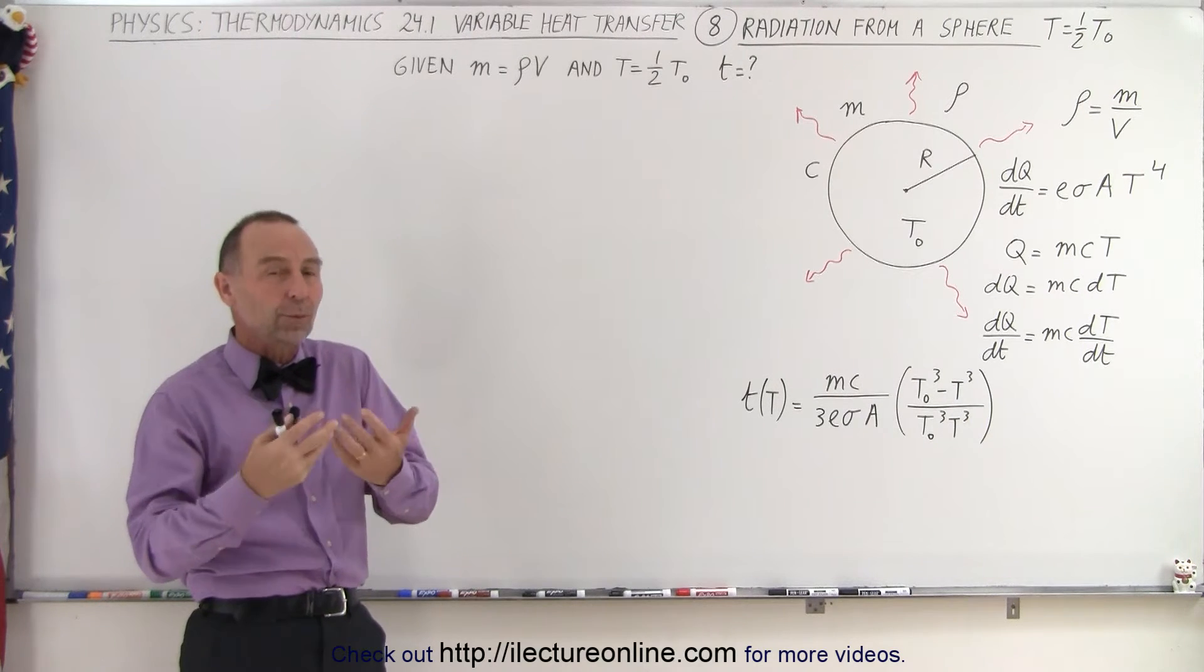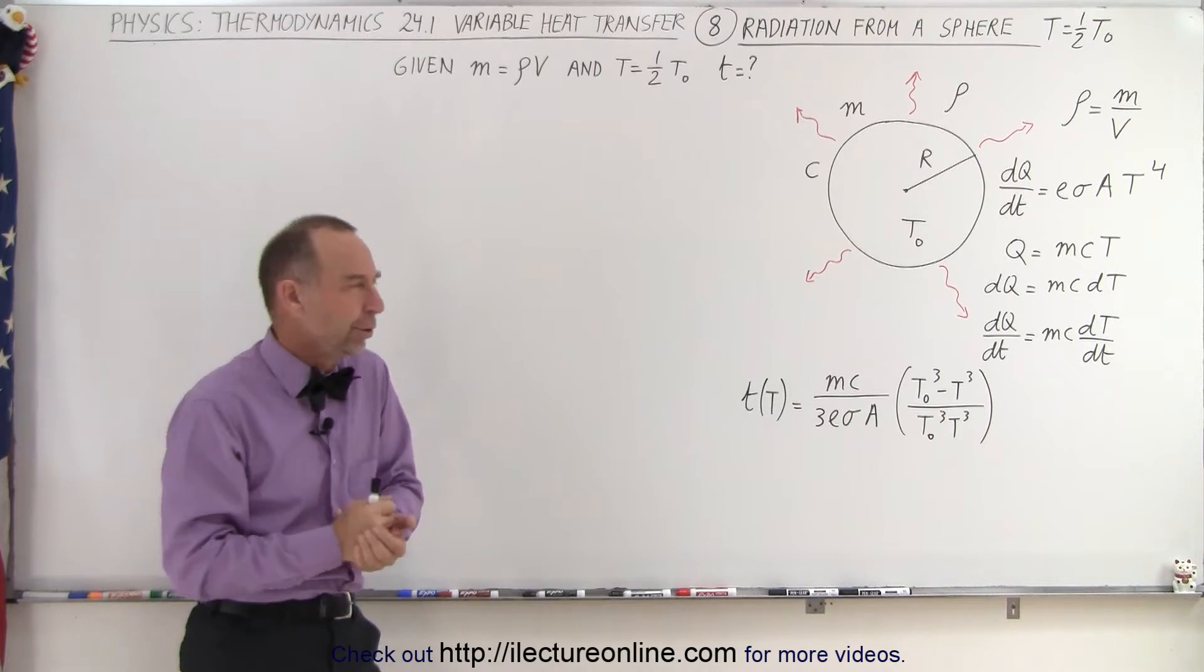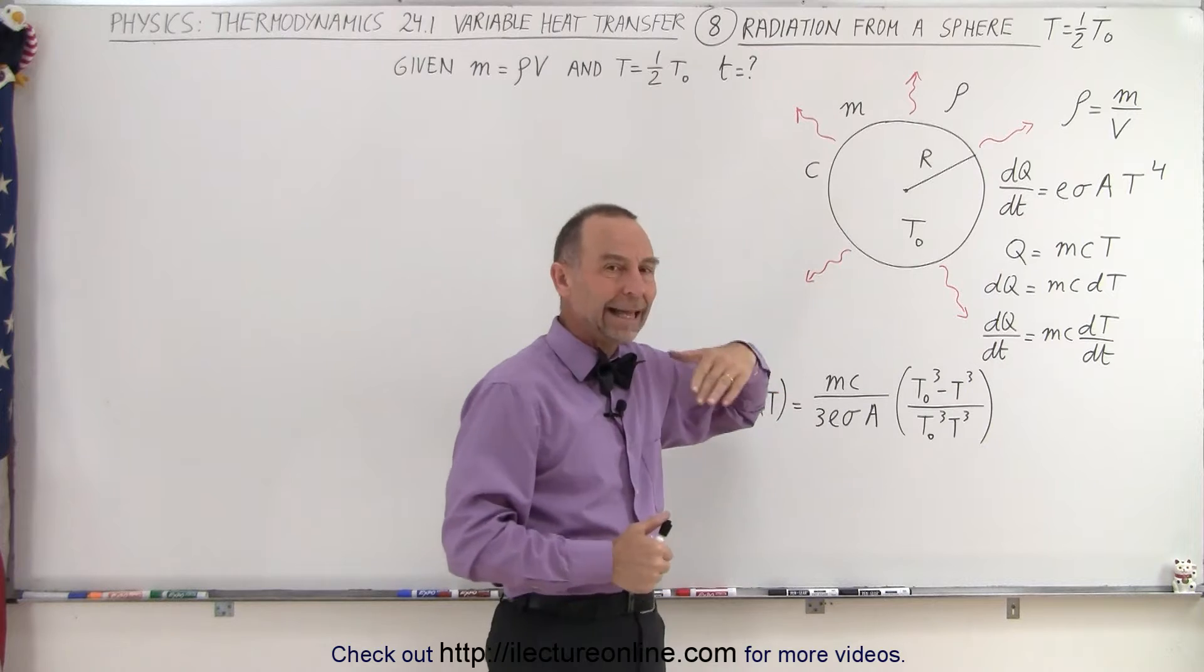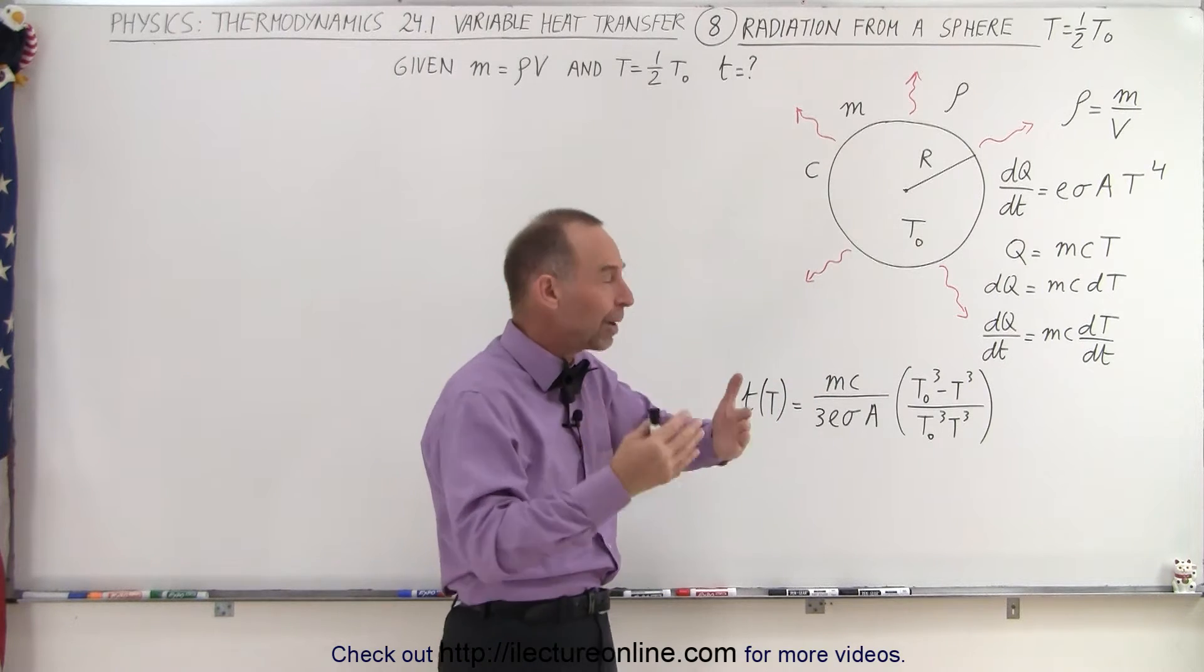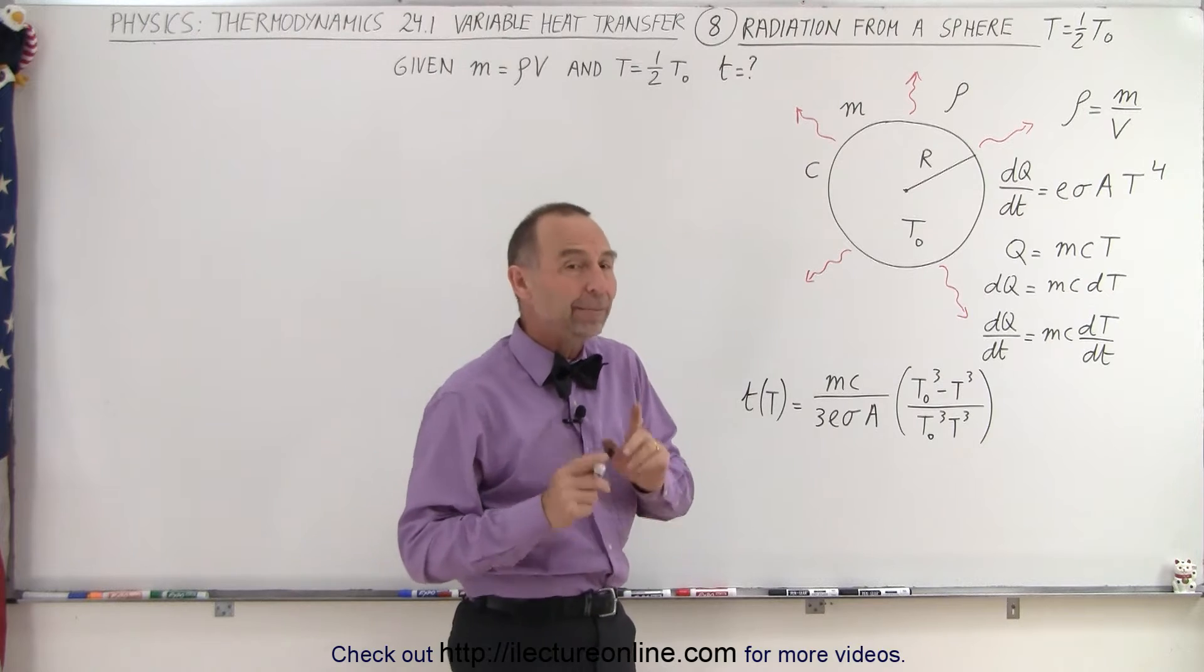Now let's find how long it will take for the temperature to go down to half of its original value. So if it starts at T sub-naught, then half T sub-naught would be the halfway point from T sub-naught to absolute zero. How long will it take to do that?